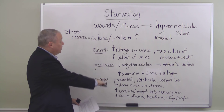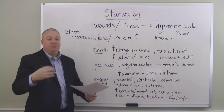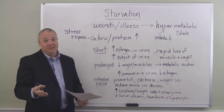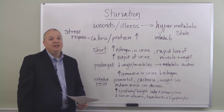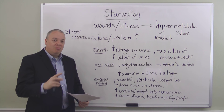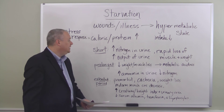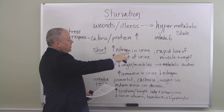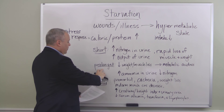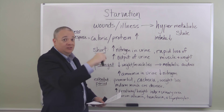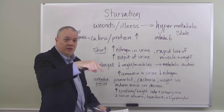You can see how things change the longer the starvation goes on. To recap: due to some sort of stress on the body — for example, a wound or an illness — the response is to send the body into a hypermetabolic state where the body is calling for more protein and more calories. However, that need is not met and intake goes down due to the illness or wound. Over the short term, the nitrogen in the urine goes up, urine output increases, and there is rapid loss of muscle and weight. If not dealt with over a prolonged period, the muscle and weight loss decreases at this stage, but metabolic acidosis kicks in and the ammonia in the urine goes up while the nitrogen goes down.